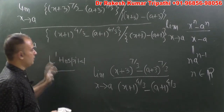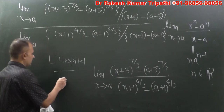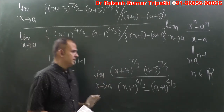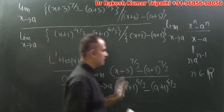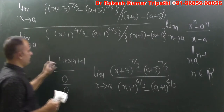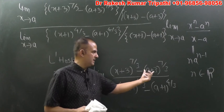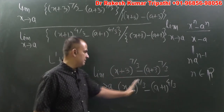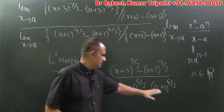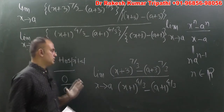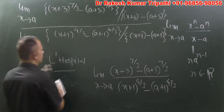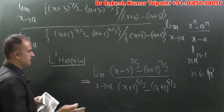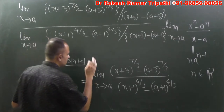L'Hôpital's rule says: if the numerator is 0 and the denominator is 0 after putting the limit, then the numerator and denominator can each be differentiated separately with respect to x. If we put x = a in the numerator, (a+3)^(7/3) - (a+3)^(7/3) = 0. Similarly the denominator becomes 0. So the 0/0 condition is satisfied and the rule can be applied.